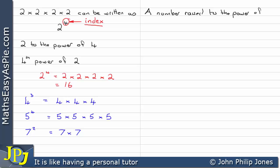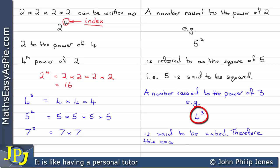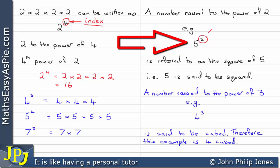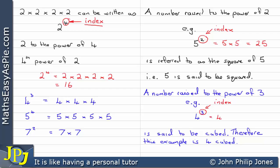A number raised to the power of 2 — for example, 5 to the 2 — is referred to as the square of 5, i.e. 5 is said to be squared. A number raised to the power of 3 — for example, 4 to the 3 — is said to be cubed. So 5 squared is 5 times 5, which equals 25, and 4 cubed is 4 times 4 times 4, which equals 64.